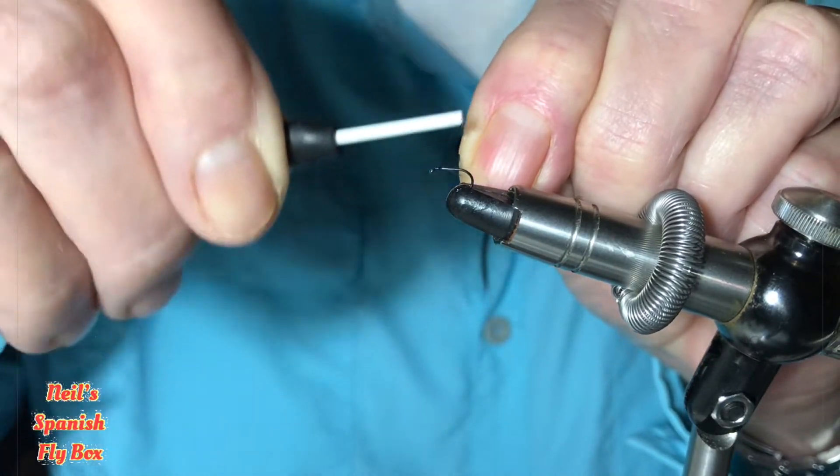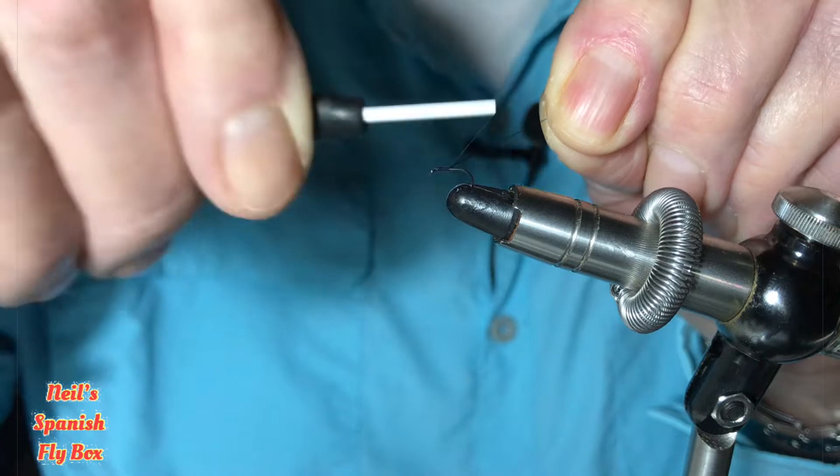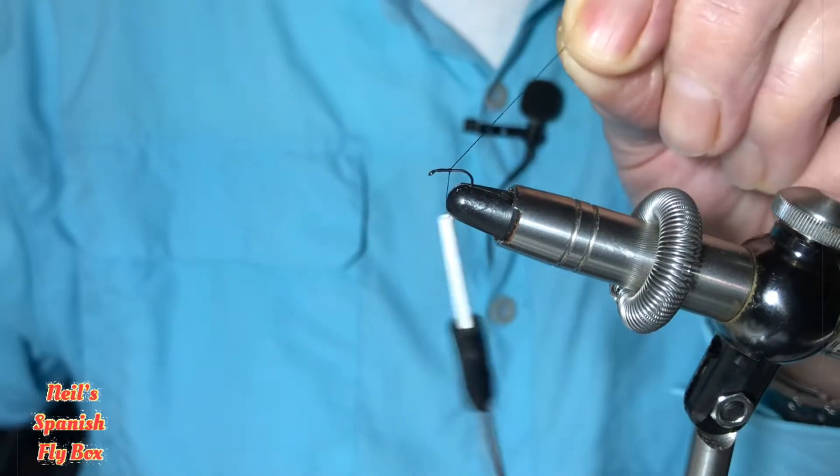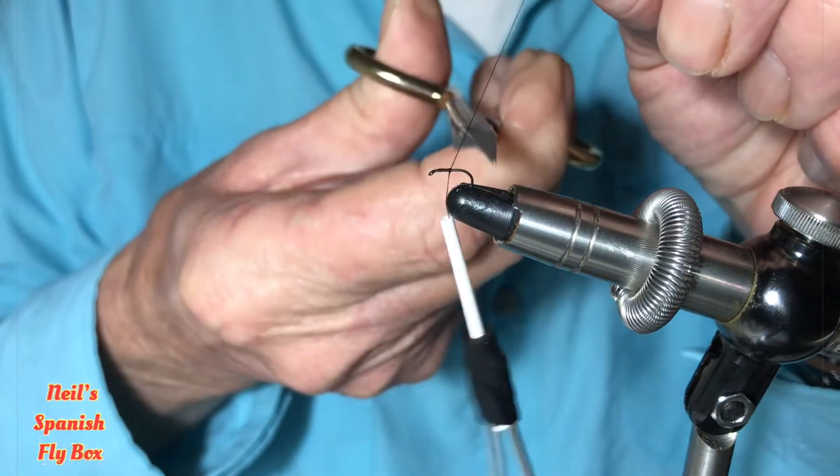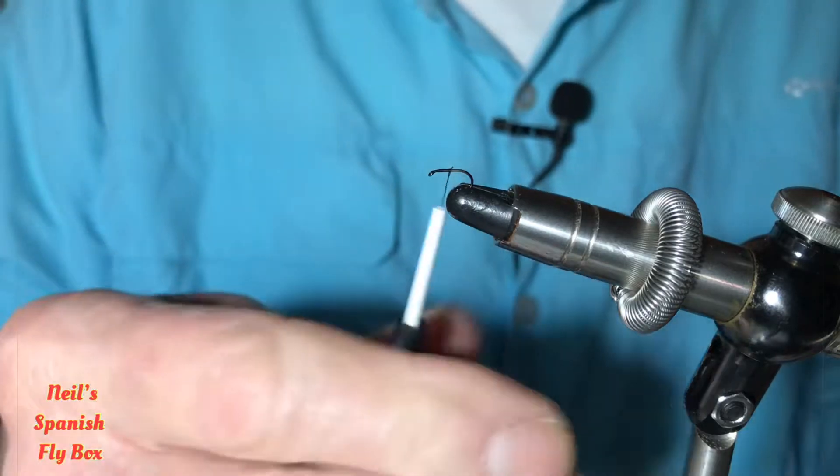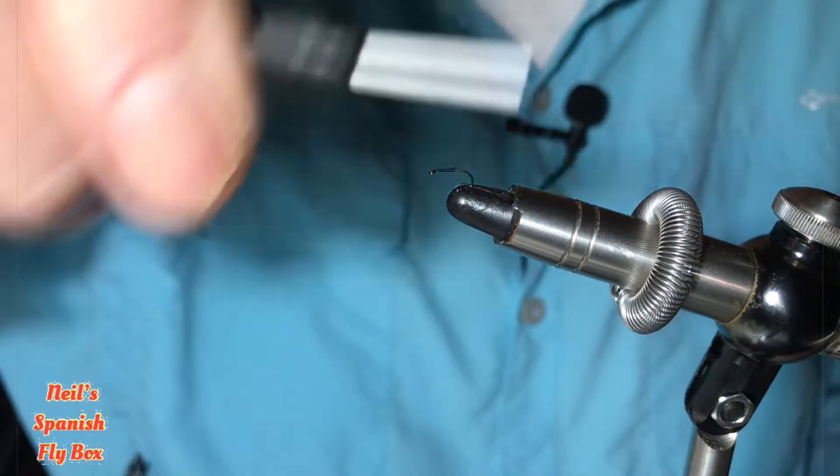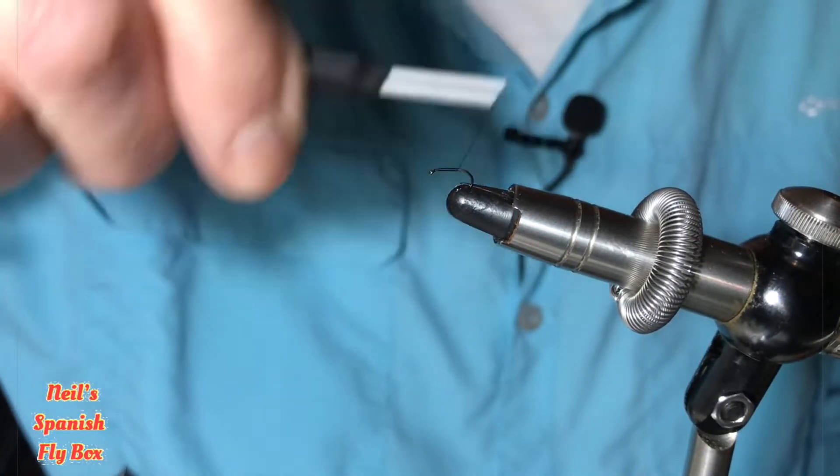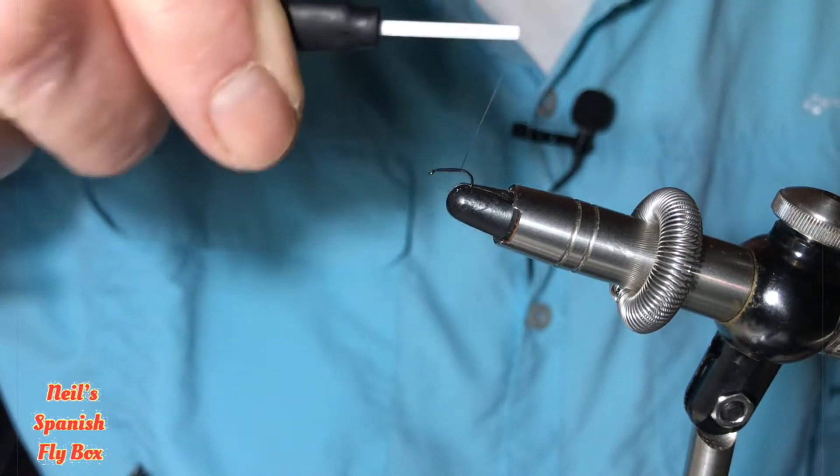Just tie it on a little bit back from the eye and trim up the excess. And wind it back to the start of the bend.